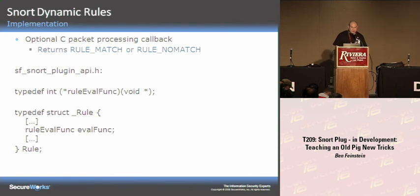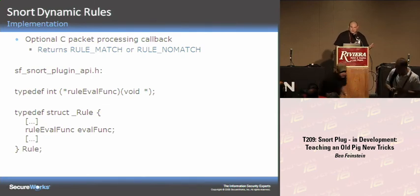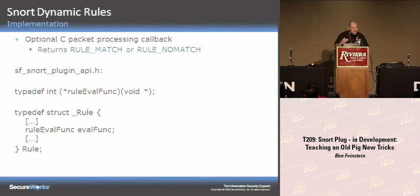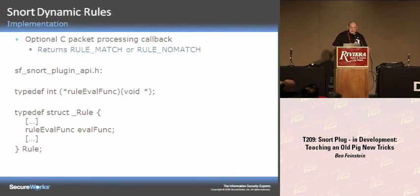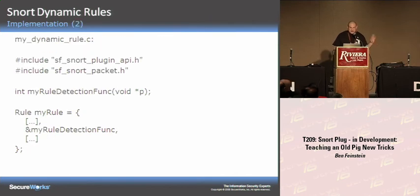The C processing callback is really the most powerful part of dynamic rules. You define a C function and tell the engine: when you've matched all the elements of my rule, also call this C function, pass the packet to it, and it will return rule-match or rule-no-match. This lets you create much more sophisticated matching algorithms than you could ever do in a rule. In your dynamic rule C file, you define the callback function and put a pointer to it in your rule structure — Snort takes care of the rest.